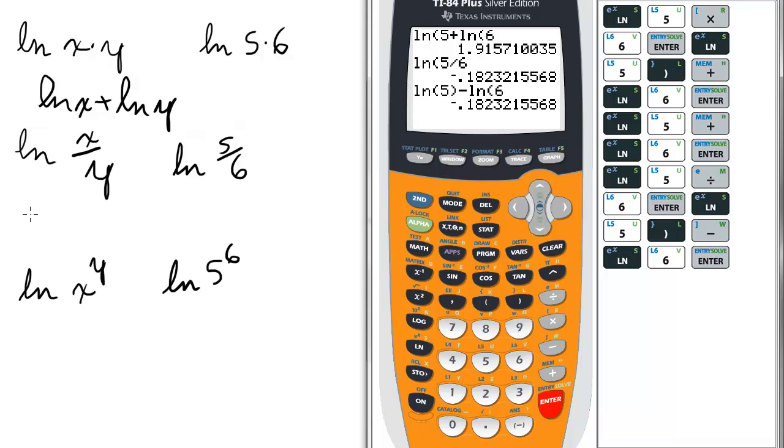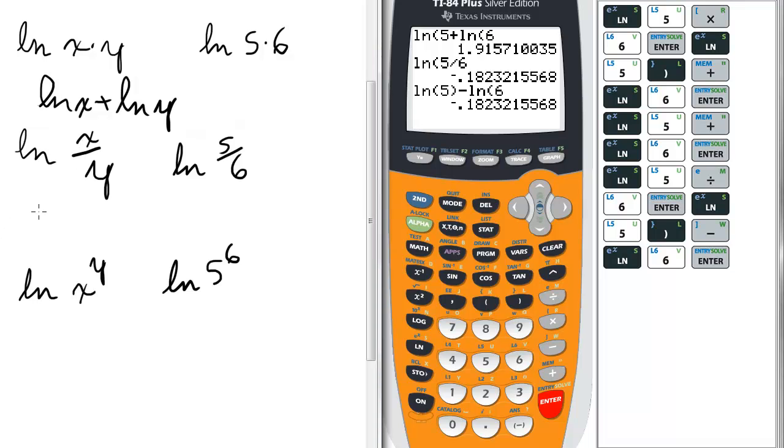So basically, the ln of x over y can be rewritten as the ln of x minus the ln of y.